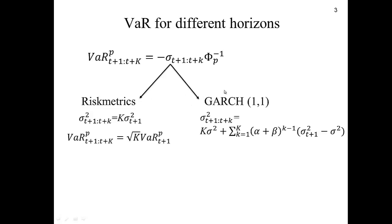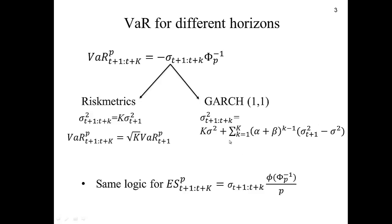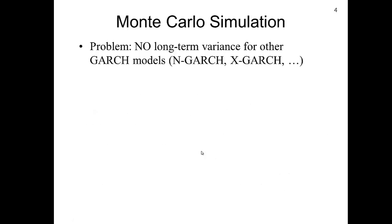The other methodology is to compute sigma with the GARCH model. In this case, sigma for t+1 to t+k is a function of the long-run variance, k (the number of days), alpha, beta, and tomorrow's variance. These two volatilities can be used under Value at Risk or for Expected Shortfall to compute a longer time period Expected Shortfall.